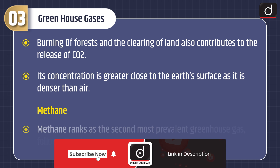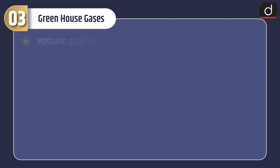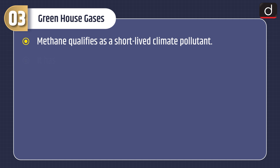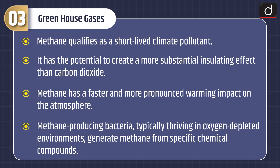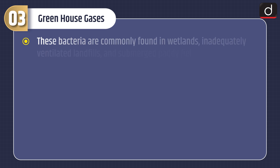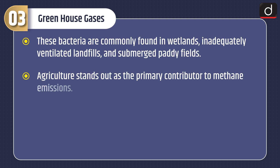Second, methane: methane ranks as the second most prevalent greenhouse gas following carbon dioxide. It qualifies as a short-lived climate pollutant and has the potential to create a more substantial insulating effect than carbon dioxide, with a faster and more pronounced warming impact on the atmosphere. Methane-producing bacteria, typically thriving in oxygen-depleted environments, generate methane from specific chemical compounds. These bacteria are commonly found in wetlands, inadequately ventilated landfills, and submerged paddy fields. Agriculture stands out as the primary contributor to methane emissions.